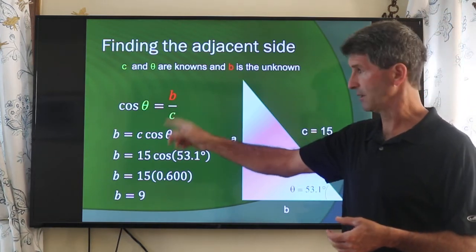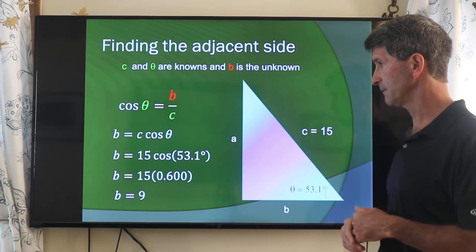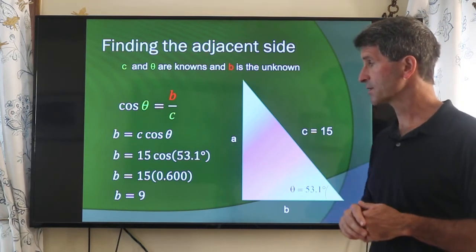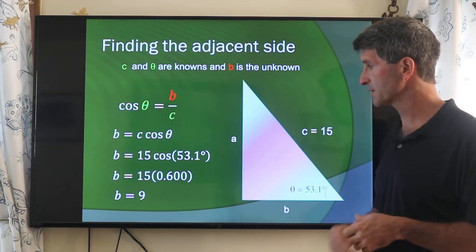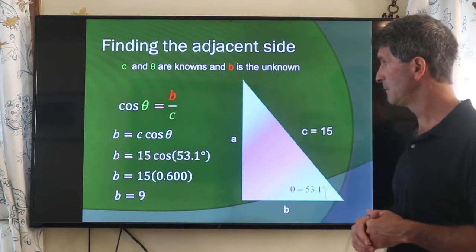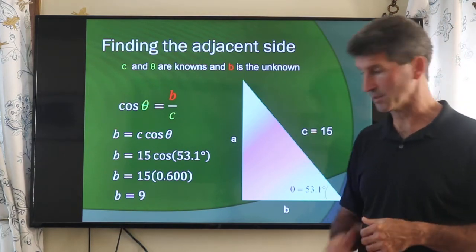Again, we solve for that unknown. Put it on the left-hand side by itself. b is equal to c cosine θ. The cosine of 53.1 degrees is 0.6. 0.6 times 15 gives me 9. So there's an application using sine and cosine.